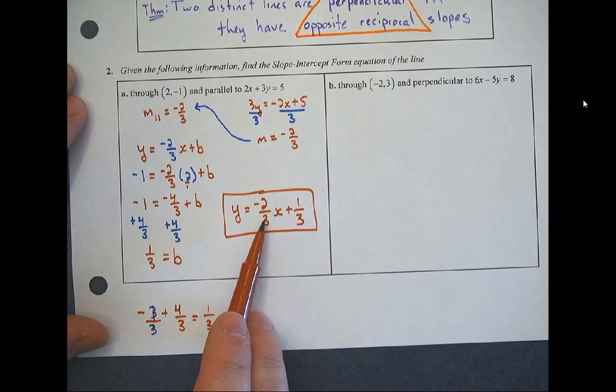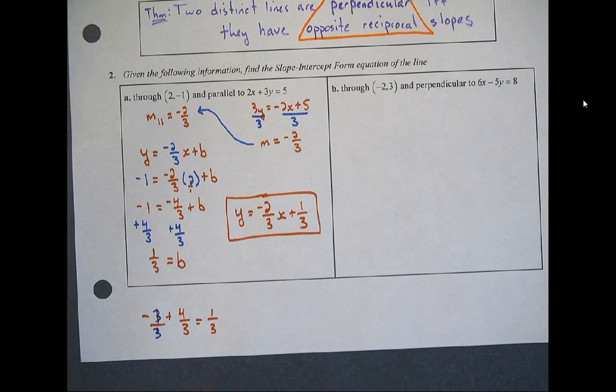So this line and this line would be parallel lines. You try the next one. Pause it, try the next one on your own. Alright, let's see how you did.